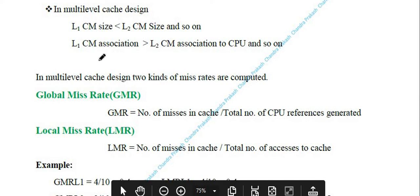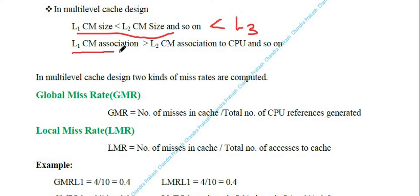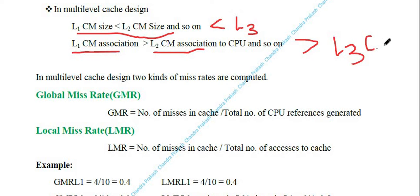If there is also an L3 cache, then L2 size is less than L3 cache size, and so on. So in general: L1 size < L2 size < L3 size. With respect to CPU association (associativity), L1 cache has the highest associativity with the CPU. If there is an L3 cache, the associativity of L2 is greater than L3, and so on for more cache levels.